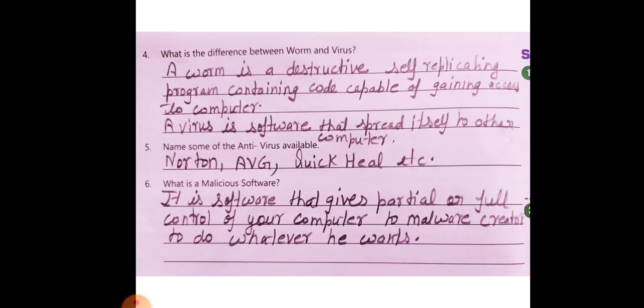Question number 6, what is malicious software? Malicious software are the programs or software that give partial or full control of your computer to malware. The malicious software will give either full control or some partial control of your computer so that they can do whatever they want to do on your computer.